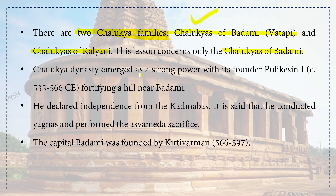The Chalukyan dynasty emerged as a strong power with its founder Pulakeshin I around 535 to 566 CE, fortifying a hill near Badami. He declared independence from the Kadambas. It is said that he conducted Yajnas and performed the Ashwamedha sacrifice. The capital Badami was founded by Kirti Varman around 566 to 597 CE.